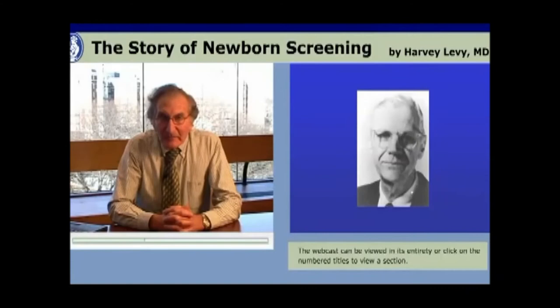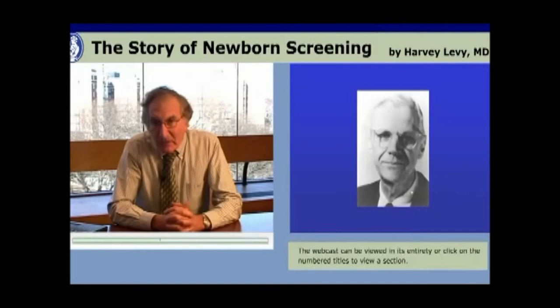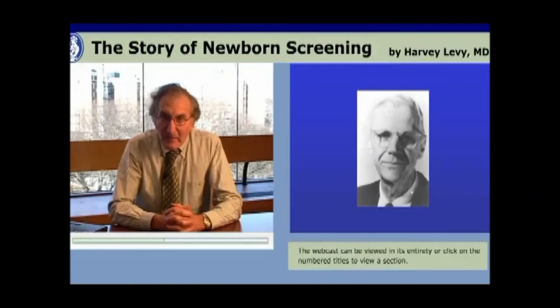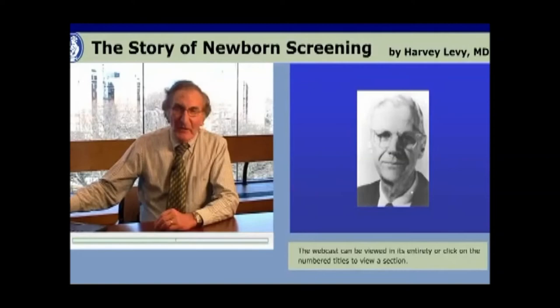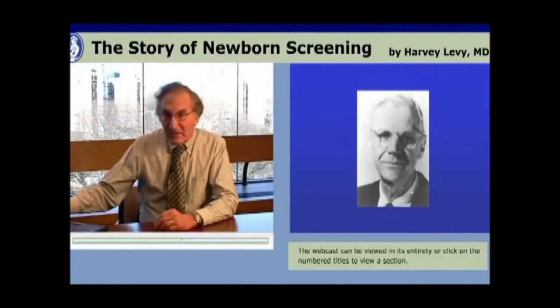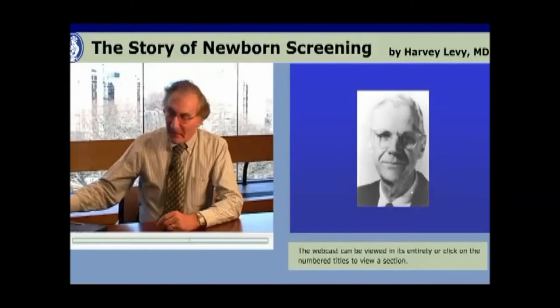Guthrie's interest in mental retardation led him to a national meeting of the National Association for Retarded Children, where he met Dr. Robert McCready, director of the Diagnostic Division of the Public Health Laboratories in Massachusetts. McCready, who also had a child who was mentally retarded, learned about Guthrie's test for PKU, became very interested, returned to Massachusetts, then went to Buffalo to learn the test in Guthrie's laboratory, brought it back, and established it as the first universal newborn screening program in the world for PKU.